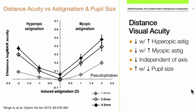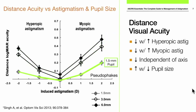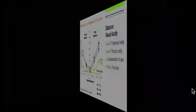The effect of pupil size is pretty clear. As pupil size decreases from 6 down to 3 down to 1.5 mm, the effect of astigmatism on acuity also decreases, because we're increasing depth of field with those smaller pupils.